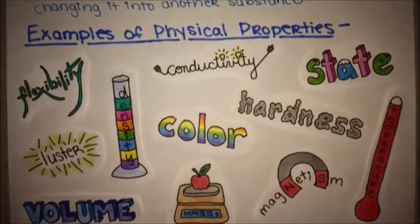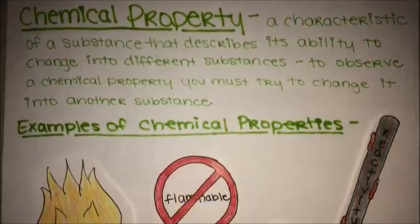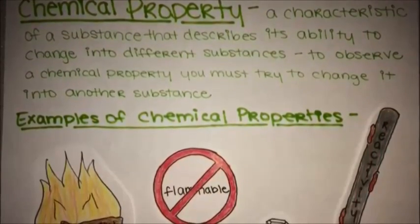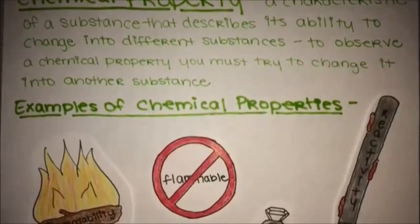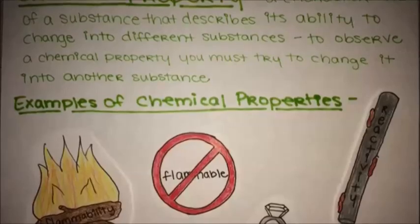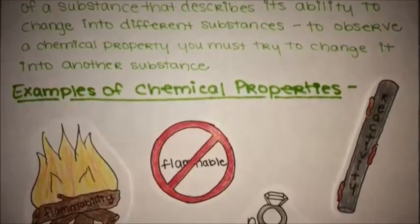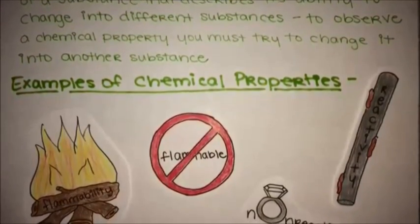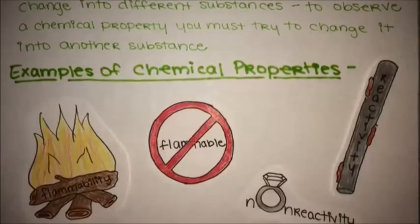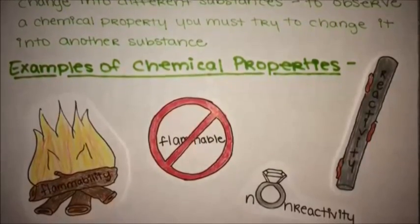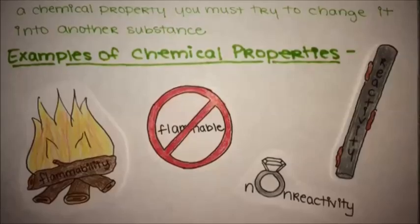More examples of physical properties include luster, flexibility, hardness, and temperature. Some properties of matter can't be seen by just observation or touch. A chemical property is a characteristic of a substance that describes its ability to change into different substances. To observe chemical properties, you must try to change it into another substance. Examples of chemical properties include flammability or non-flammability and reactivity or non-reactivity.